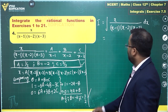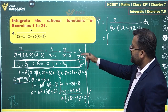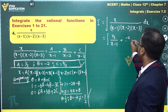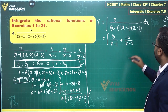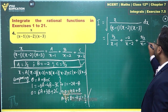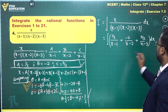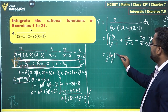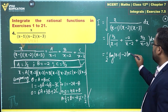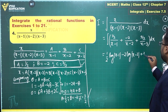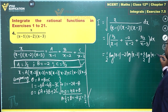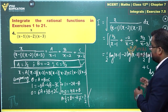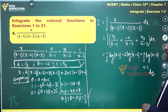Both methods give the same values — as expected for an identity. So the integral becomes: (1/2) over (x minus 1) minus 2 over (x minus 2) plus (3/2) over (x minus 3), all dx. Integrating gives (1/2) log|x minus 1| minus 2 log|x minus 2| plus (3/2) log|x minus 3| plus constant. That is the final answer for this fourth question.